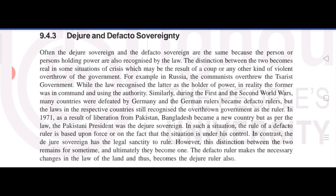The distinction between the two becomes real in situations of crisis, such as a coup or violent overthrow of the government. For example, in Russia, the communists overthrew the Tsarist government. While the law recognized the latter as the holder of power, in reality the former was in command and using the authority. Similarly, during the First and Second World Wars, many countries were defeated by Germany and the German rulers became de facto rulers.